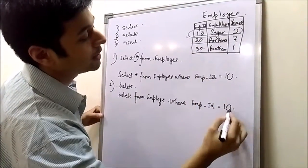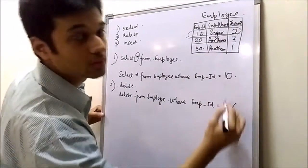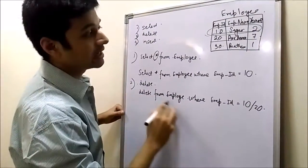Or if you want to delete this row, then we will write empid equals to 20. This is the statement for delete.